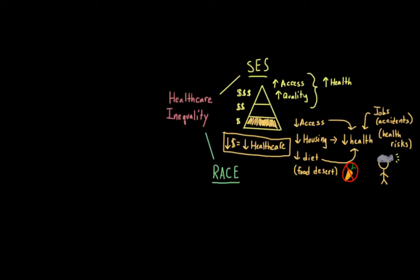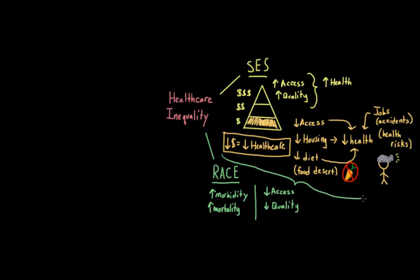Race can also play a large role in healthcare equality. African Americans, Hispanics, and Native Americans tend to have higher morbidity rates — higher rates of disease and illness — as well as higher mortality rates. They also tend to have worse access to healthcare, and the care they do receive tends to be of lower quality. Although some racial differences can be attributed to SES factors, it does not explain everything. Even when economic differences and types of insurance are taken into account, minorities are still less likely to receive both everyday standard healthcare and treatments for life-threatening conditions.